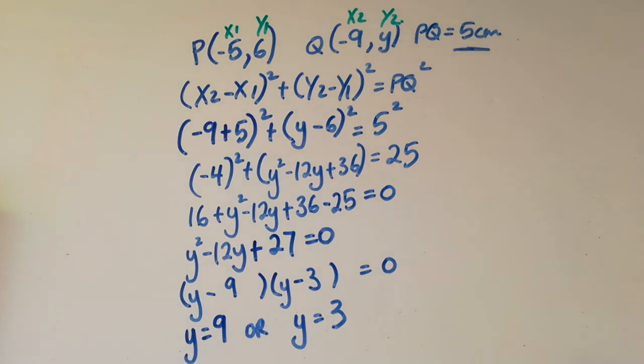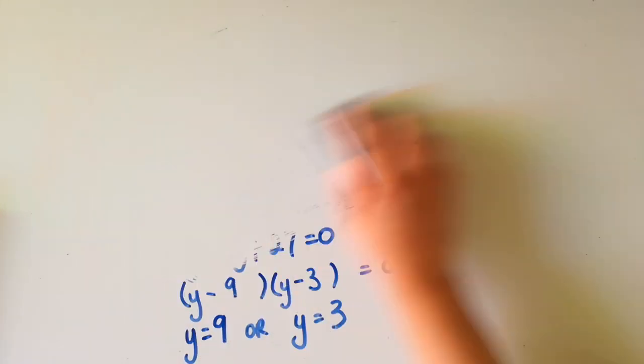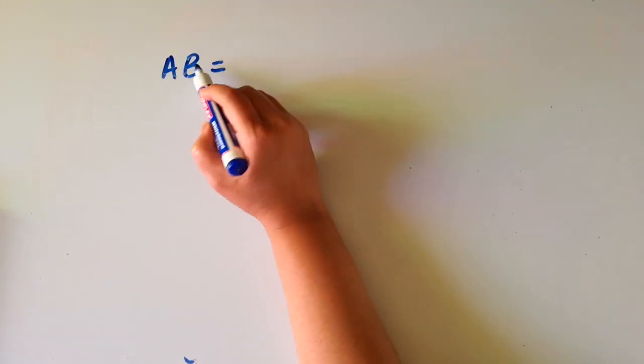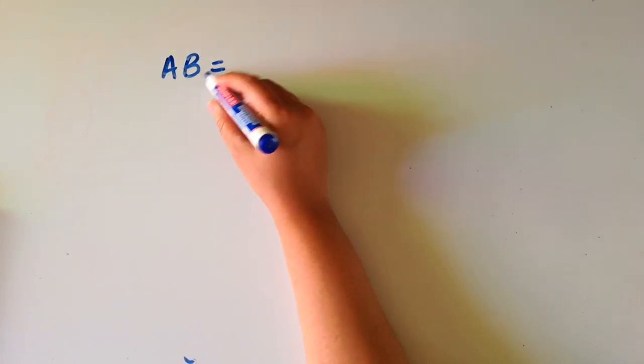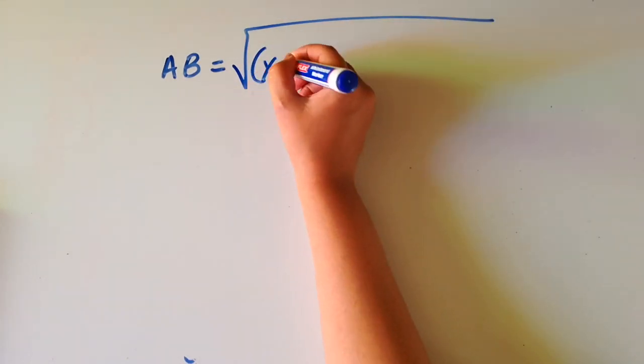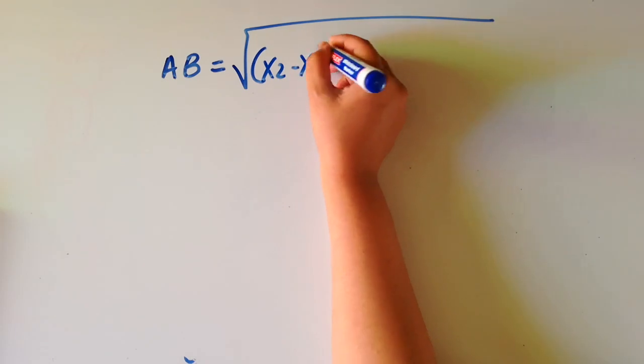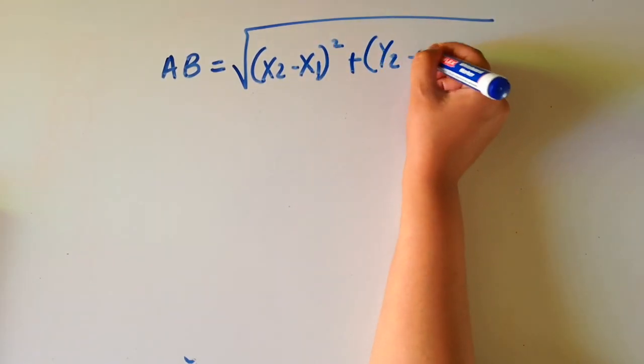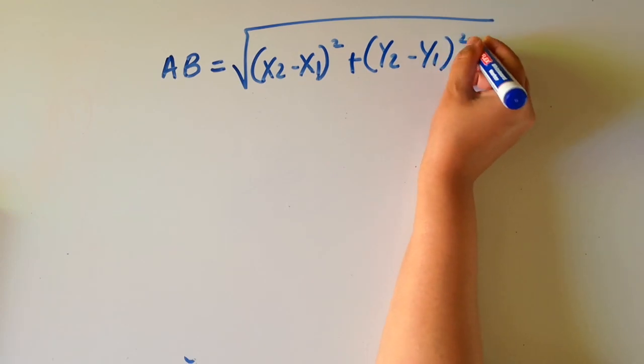Let's do a very quick recap. To work out the distance between two points, let's just call those points, for example, AB. So the distance between these two points AB will give you the square root of (x2 minus x1) squared plus (y2 minus y1) squared.